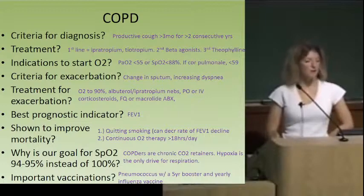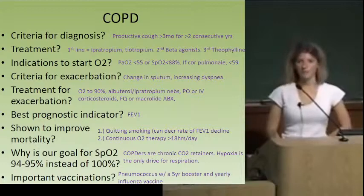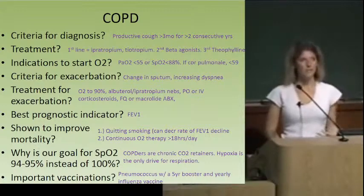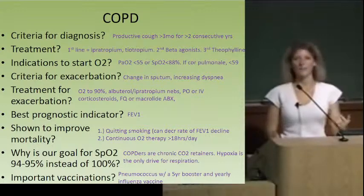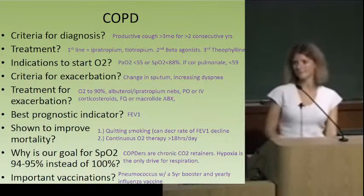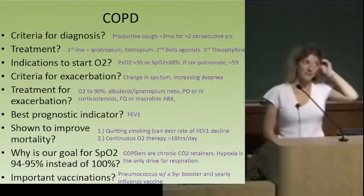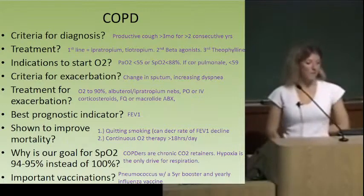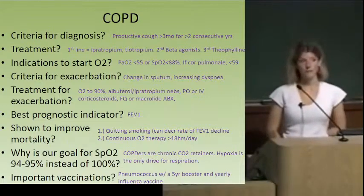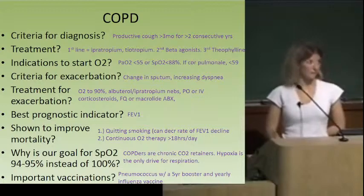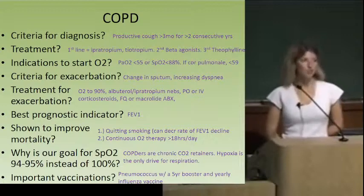Best prognostic indicator for COPD: FEV1. So we do spirometry — FEV1 is the best indicator of prognosis. What's been shown to improve mortality? Two things: oxygen for a long time — greater than 18 hours a day — and if they smoke, they've got to quit smoking. Why is our goal pulse ox 94 to 95% instead of 100%? These are chronic CO2 retainers — their respiratory drive doesn't rely on pH or CO2; they need hypoxia to drive respirations.